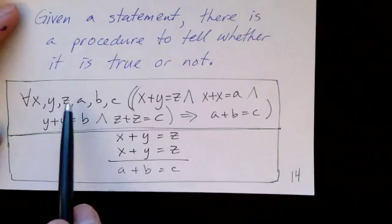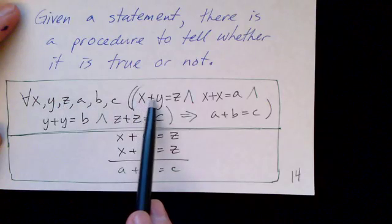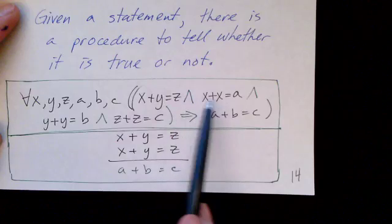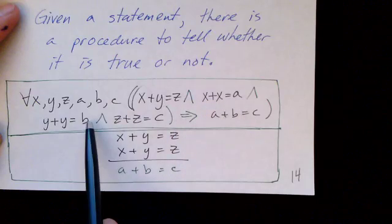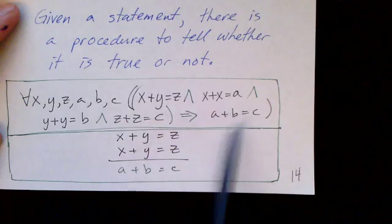So here's an example. Here's some statement with a bunch of variables. For all x, y, z, a, b, c, if x + y = z and x + x = a and y + y = b and z + z = c, then we can infer that a + b = c.